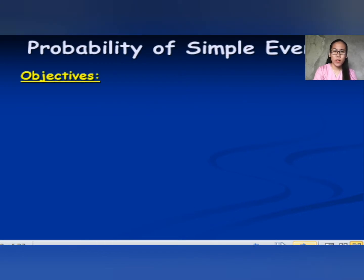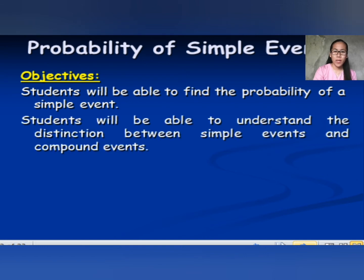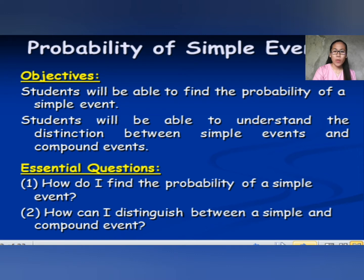Here are the objectives. First, students will be able to find the probability of a simple event. Second, students will be able to understand the distinction between simple events and compound events. Essential questions: how do I find the probability of a simple event? And how can I distinguish between a simple and compound event?